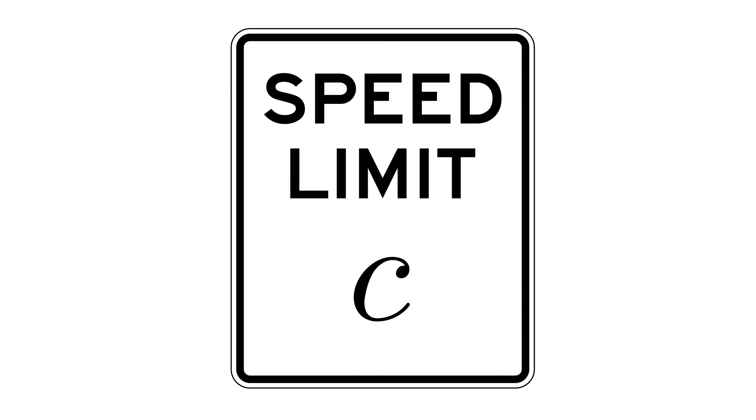A quick comment on notation. The factor of square root of 1 minus v squared over c squared shows up a lot in special relativity, so we give it a special symbol of 1 over gamma, or gamma equals 1 over the square root of 1 minus v squared over c squared. This is known as the gamma factor.